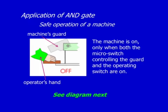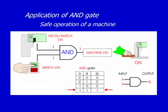We need a logic gate for the safe operation of a machine. This machine here. The machine is on only when both the micro switch controlling the guard here and the operating switch are both on. We need an AND gate for the safe operation. Only when the micro switch and the operating switch are both on will the machine turn on.